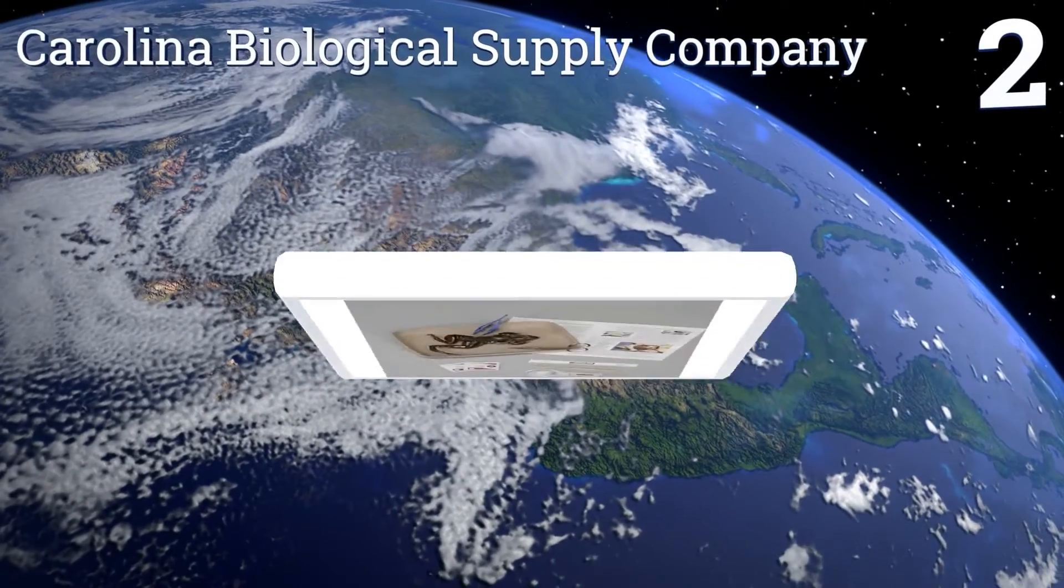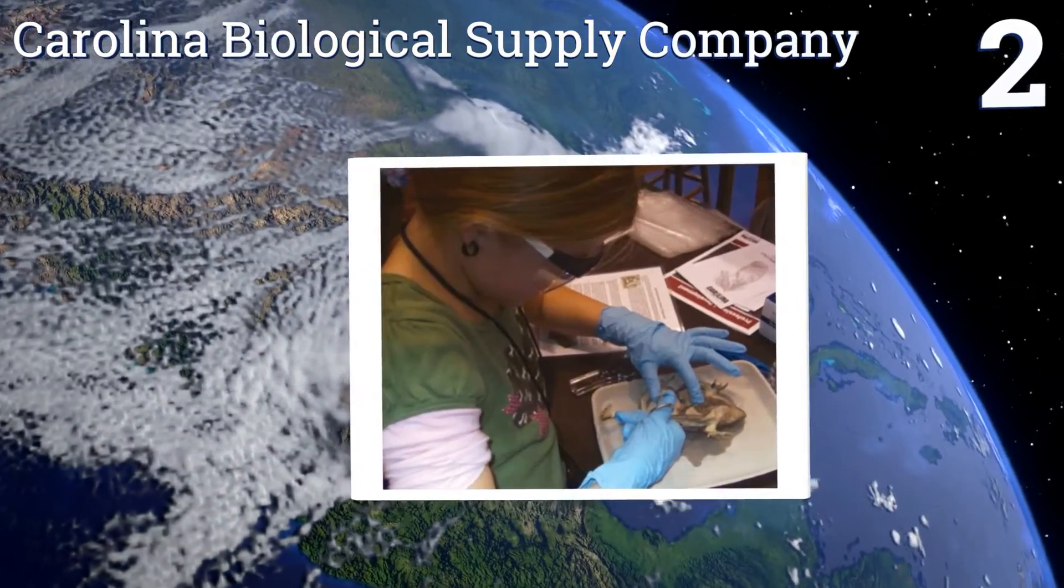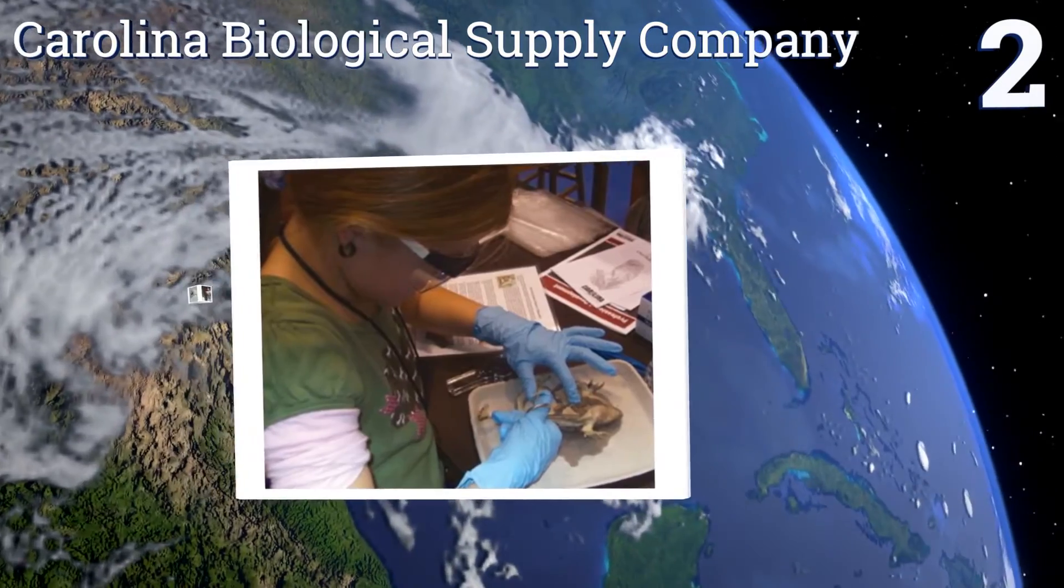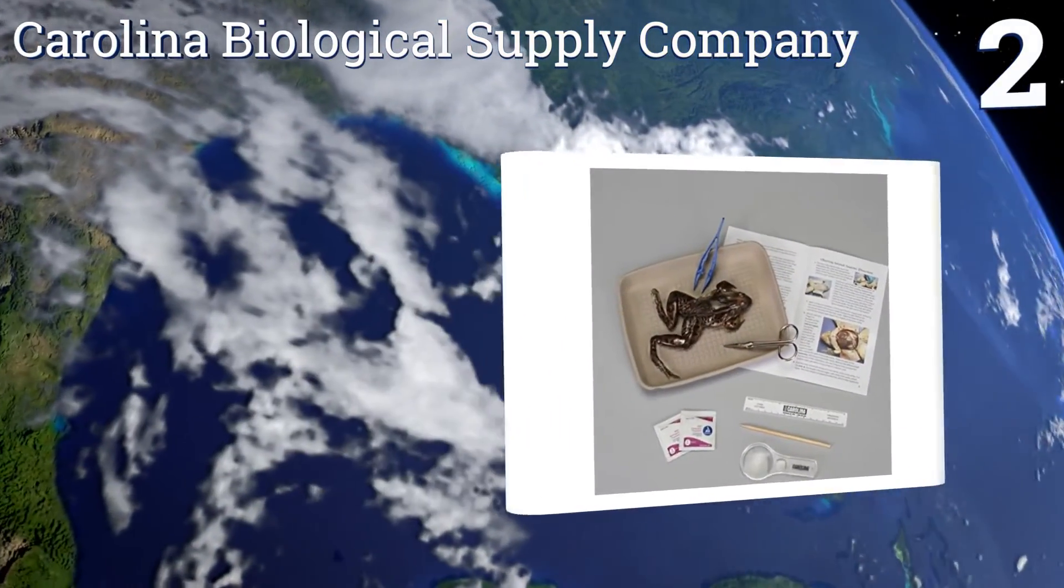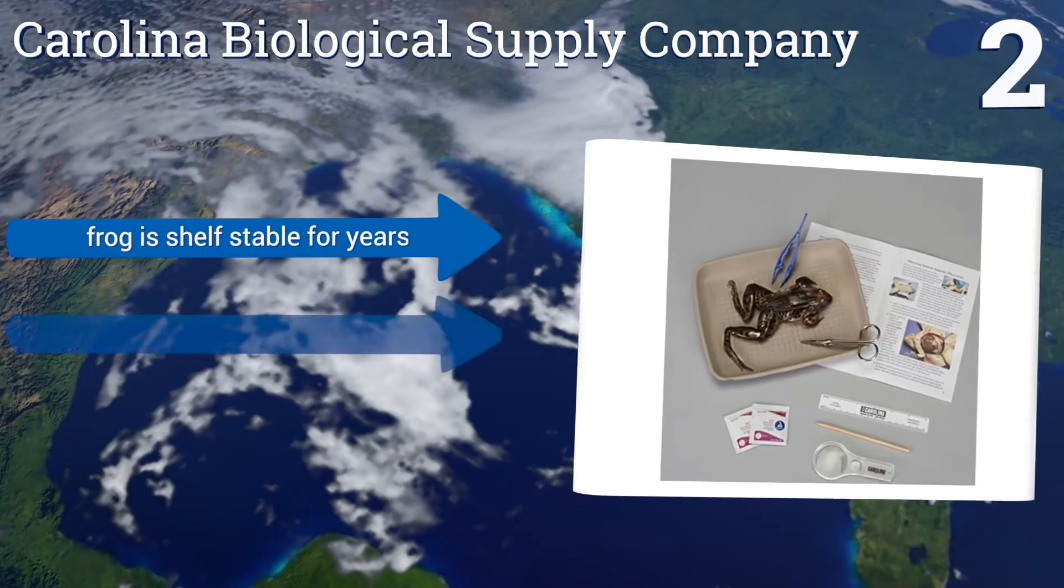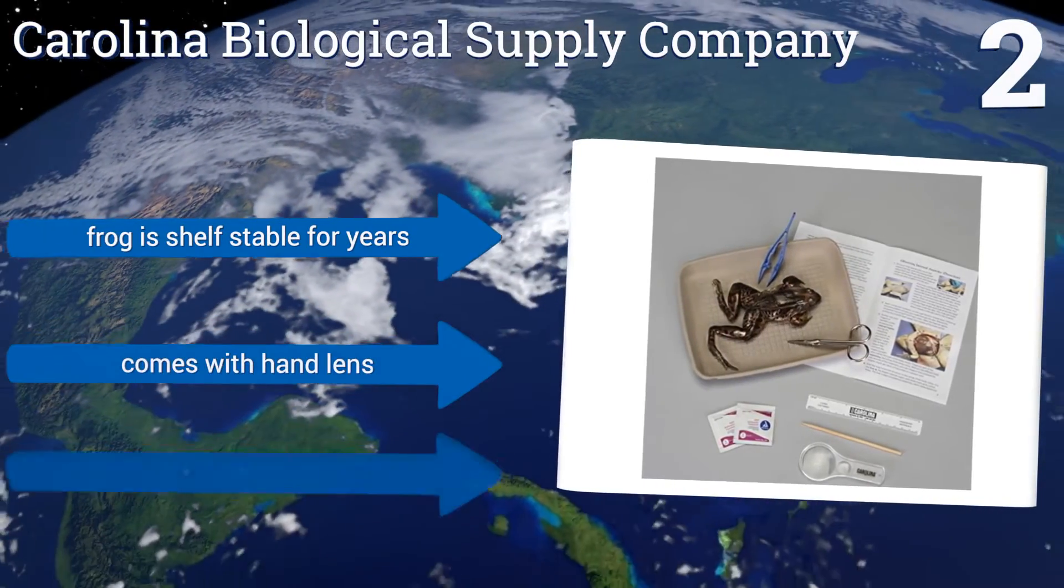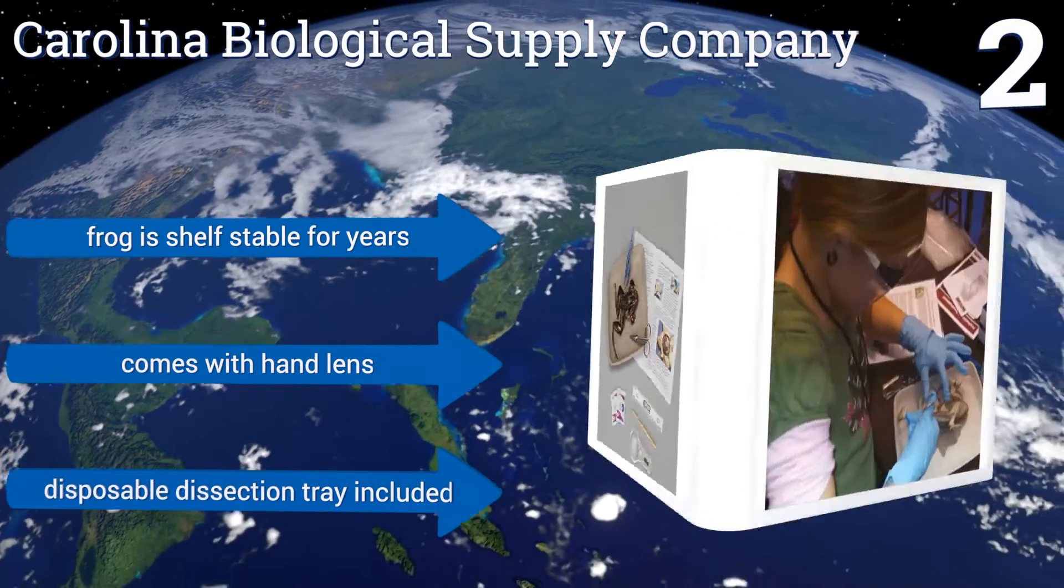At number 2, this Young Scientist's Frog Dissection Kit from Carolina Biological Supply Company comes with everything you need to dissect a frog, including an actual preserved frog's body. It's a convenient option for the high school biology classroom. The frog is shelf-stable for years.